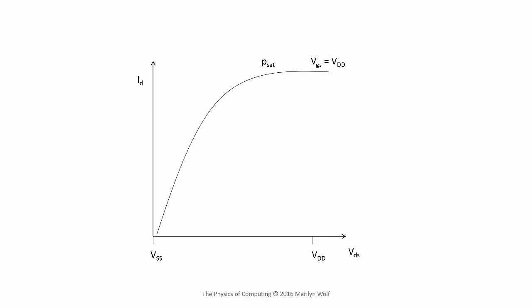Here's the drain current curve for the transistor. The linear-saturation boundary divides the current characteristic into two parts. We want a single value for the resistance of the transistor, and we'll generate that using two different resistances, one for each of these regions. In the case of the saturation region, we'll put a point at the middle of the curve. The line between the origin and that point gives us the resistance. The slope of that line is one over the resistance, which we'll call the saturation resistance.